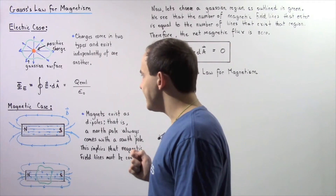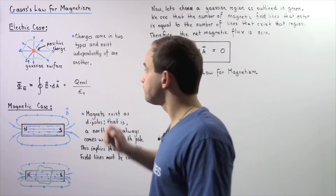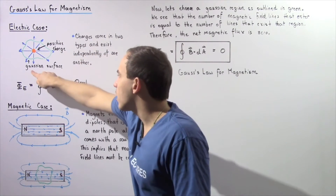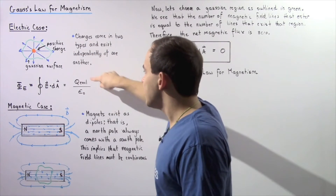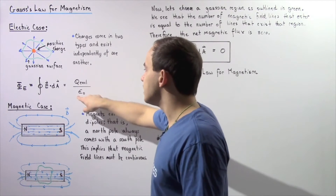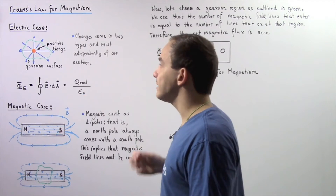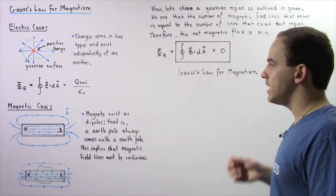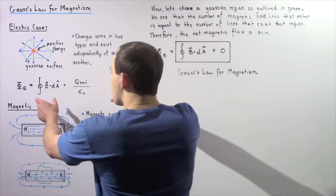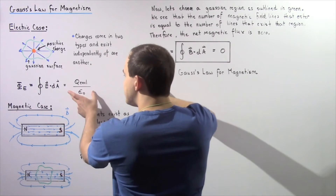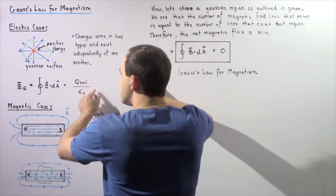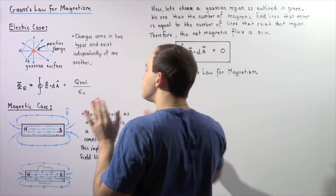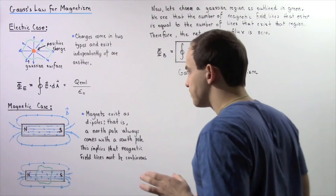This is equal to the ratio of the total charge enclosed inside our Gaussian surface divided by epsilon naught, where epsilon naught is a constant known as the permittivity of free space. This equation is known as Gauss's Law for Electricity.